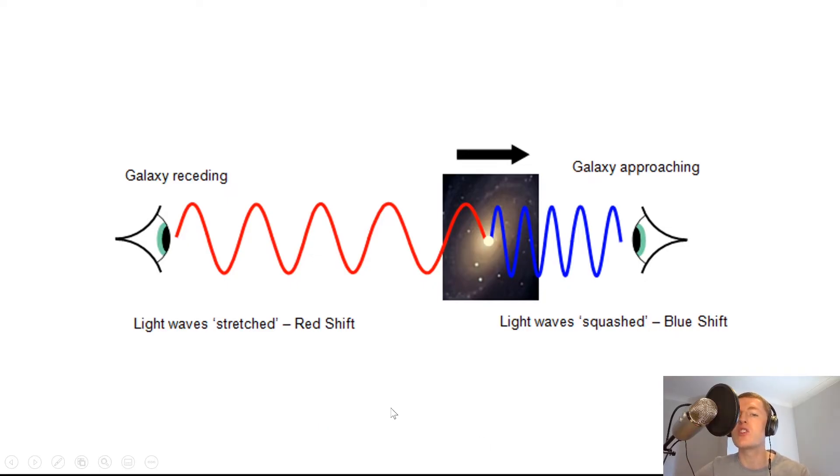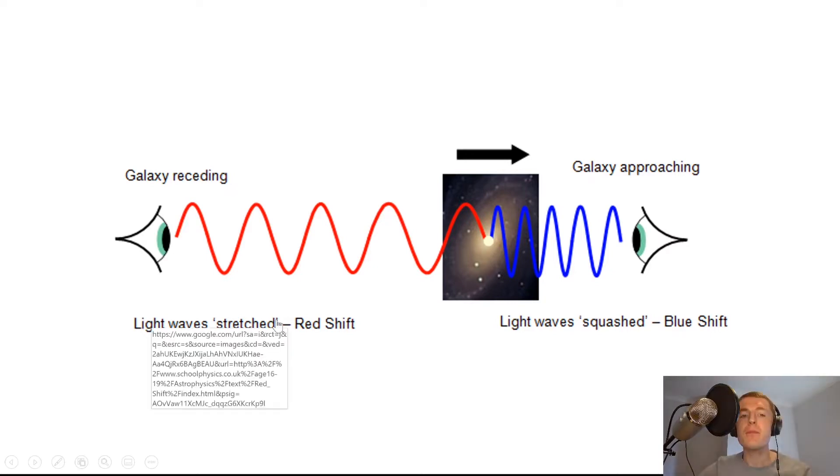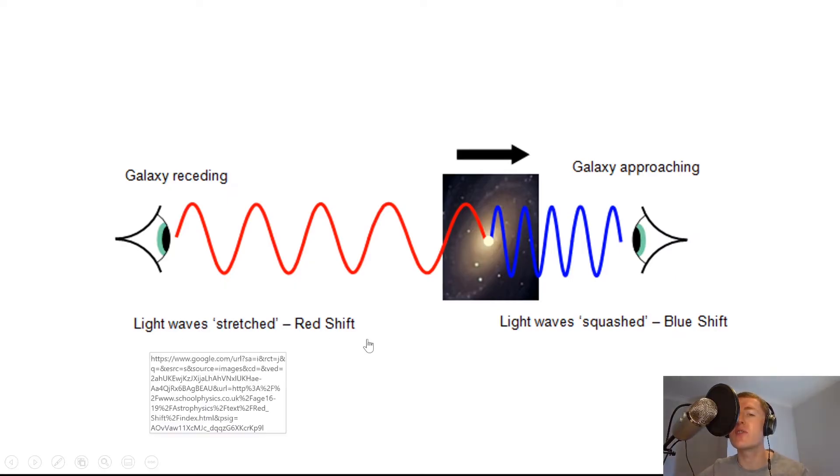And when the wave gets stretched out, the wavelength of the wave is going to increase. So that means that the absorption lines in the spectra will move towards the red end of the spectrum. We're not necessarily saying that the color of the light seen from the galaxy is turning red. It's just that the light is shifting towards the red end of the spectrum. And that's because red has the highest wavelength in the visible spectrum. Remember ROYGBIV. So the light waves in this case are stretched for redshift.